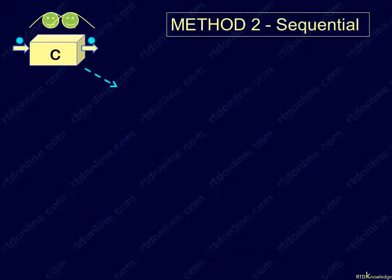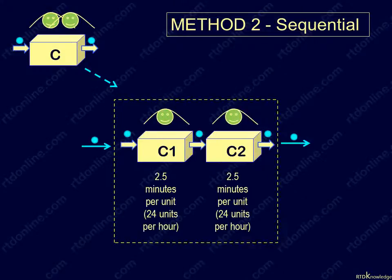Let's now look at the sequential method. Here the two operators will share equally the tasks within workstation C. Station C1 performs the first set of tasks, then passes the unit on to station C2, which does the second and final set. Since station C has a 5-minute cycle time, C1 and C2 will each have a 2.5-minute cycle time.